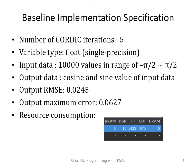We performed five CORDIC iterations, and the type of variables was set to single precision floating point. As the input data, 10,000 values were provided in the range of minus pi over 2 to plus pi over 2. The expected output data is the cosine and sine values of the input data. The output RMSE was 0.0245, the output maximum error was 0.0627, and the resource consumption was 10 DSPs, 1425 flip-flops, and 975 lookup tables.